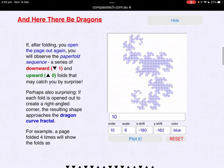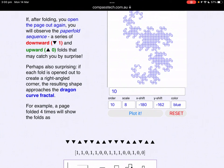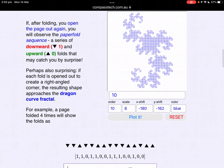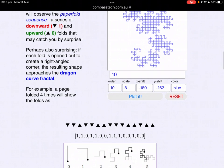Finally, a quick look at this mysterious dragon curve. So, if after folding you open the paper out again, we observe the paper fold sequence, a series of downward and upward folds. Each fold is opened out to create a right angled corner or if you made it into a right angled corner, then the shape has been called the dragon curve or dragon curve fractal.